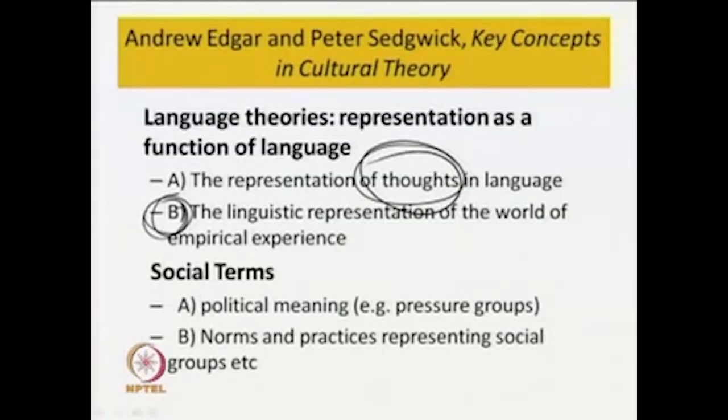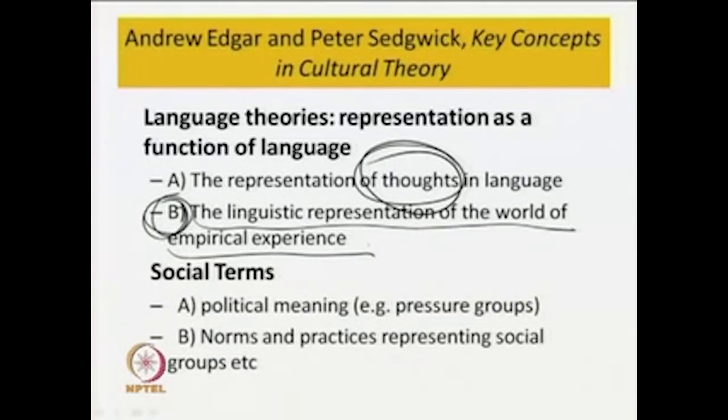However, having said this, point B — the linguistic representation of the world of our empirical experience — has received the most attention in the study of representation in cultural studies. Everything is represented in terms of language, language being the most common symbolic form. Cultural studies, at least the new cultural studies following the linguistic turn and post-structuralism, has posited that even culture is a language. These representations — the norms and practices representing social groups — are also, or could be read as, a language.